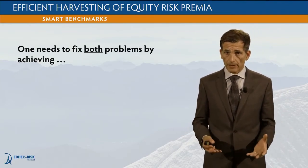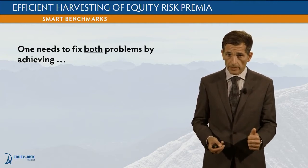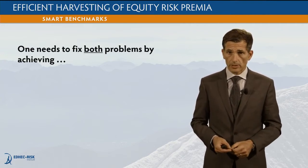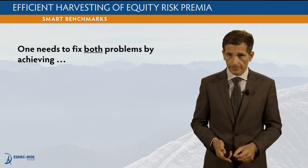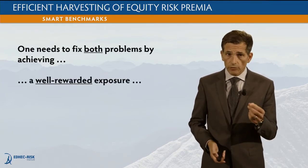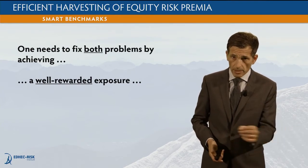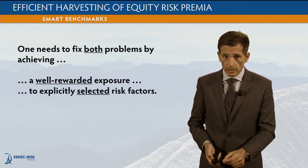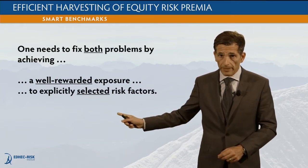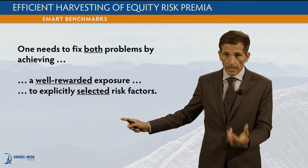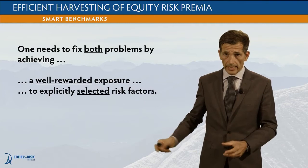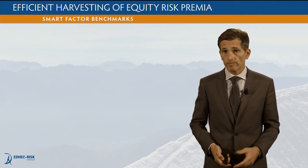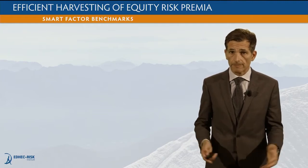Cap-weighted benchmarks suffer from two main limitations: first, they are too concentrated, and second, they have the wrong or unintended set of factor exposures. What we need to do is fix both problems. We do this by achieving a well-rewarded, better-diversified exposure to explicitly selected risk factors. Rather than letting the weighting scheme decide what the factor bias will be, we want to be proactive and make an explicit choice about the factor exposures we hold — and that is exactly what smart factor indices or smart factor benchmarks allow you to do.